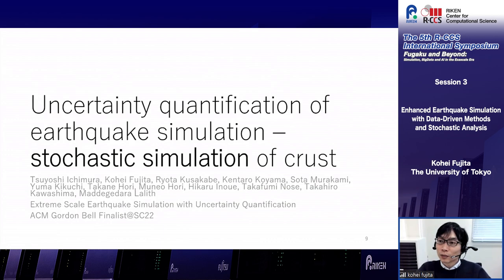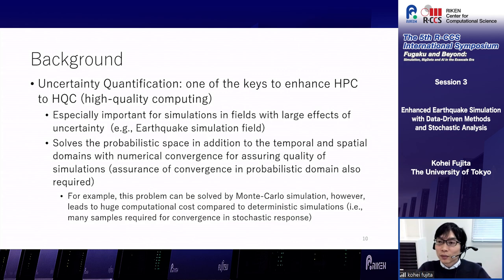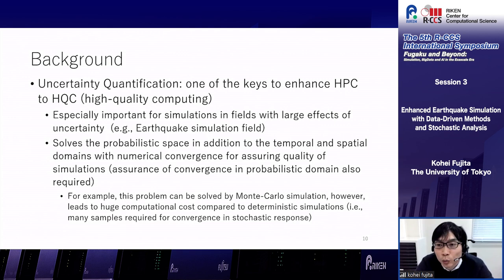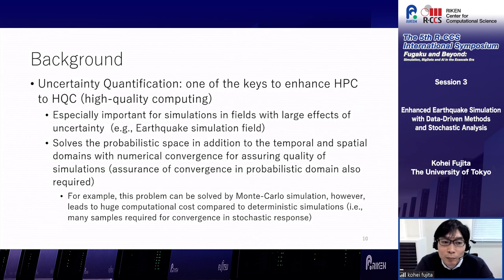Next I will talk about uncertainty quantification of earthquake simulation, with stochastic simulation of Earth's crust as an example. Uncertainty quantification is one of the keys to enhance HPC to high-quality computing (HQC), and is especially important for simulation in fields with large uncertainty effects such as earthquake simulation. This problem solves the probabilistic space in addition to temporal and spatial domains, requiring numerical convergence in the probabilistic domain as well. This problem can be solved using Monte Carlo simulation, however this leads to huge computational cost as many samples are required for convergence in the stochastic response.